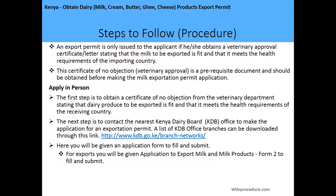This application can only be done in person. Step one is to obtain a certificate of no-objection from the veterinary department, stating that the dairy produce to be exported is fit and meets the health requirements of the receiving country. After that, you are supposed to contact the nearest Kenya Dairy Board office to make the application for the exportation permit.